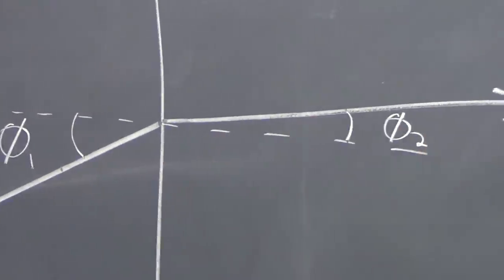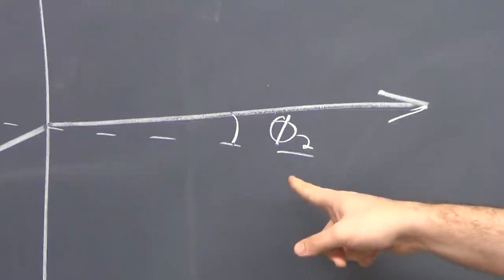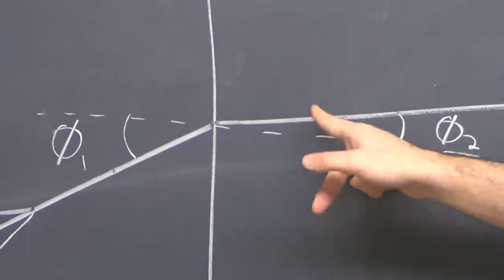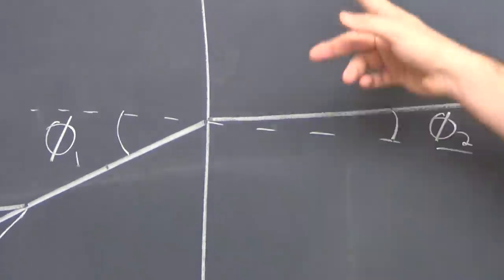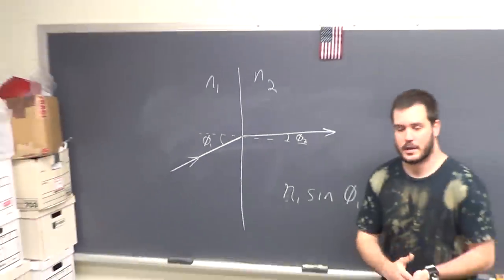Then it's going to travel through, and its new angle, again off the normal of the surface, is going to be theta2, and the new material has N2 as its index of refraction.